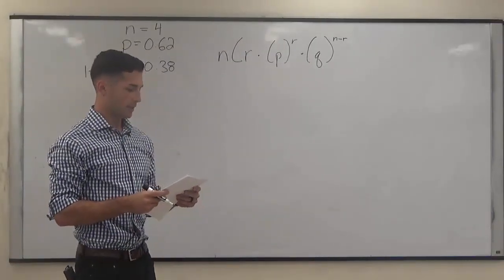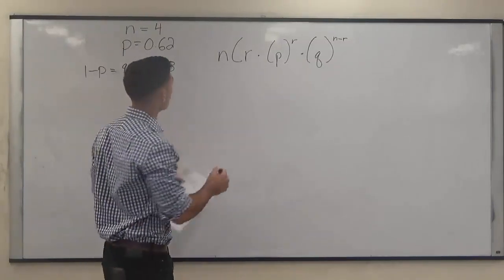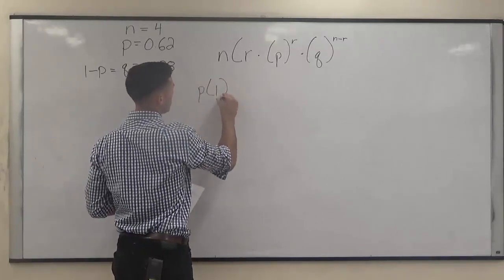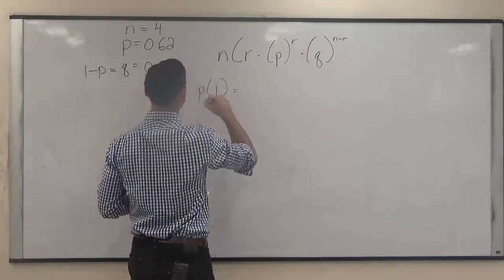it says probability of exactly one. So we're going to plug this into the formula. The probability of exactly one responding this way, plugging in here,